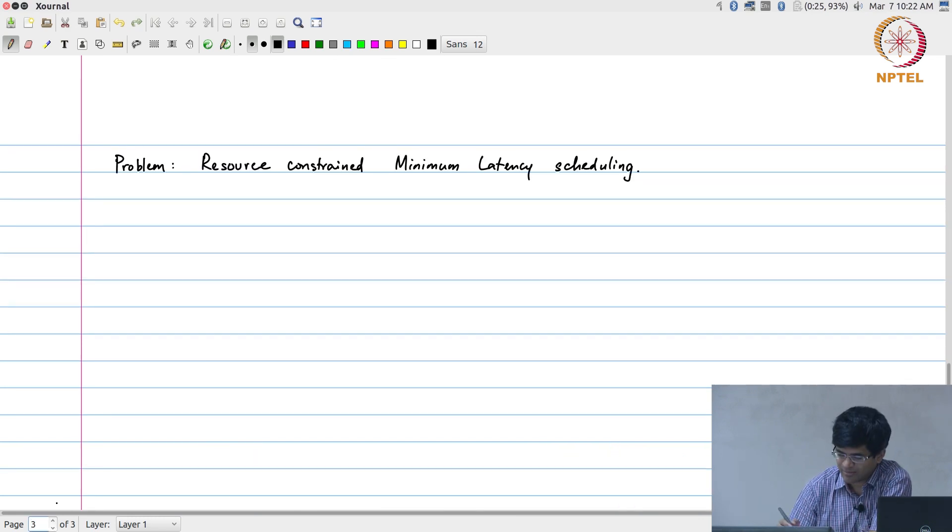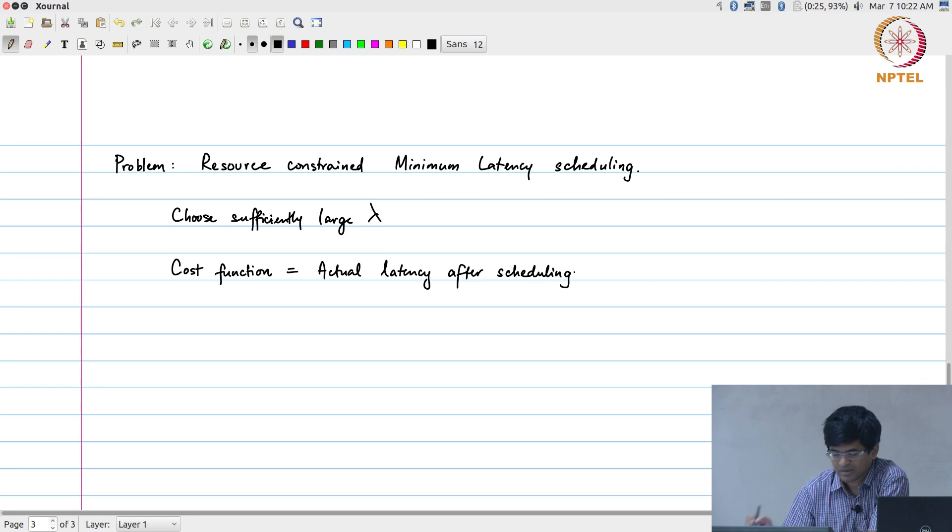As long as I can choose some value of lambda—choose a sufficiently large lambda—and then what should my cost function be? This should be the actual latency right. So the cost function that I am trying to optimize is the actual latency after scheduling all the operations, assuming that all the constraints have been satisfied.